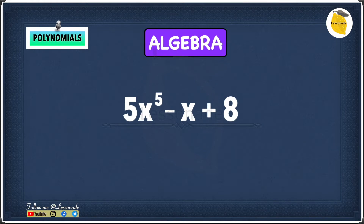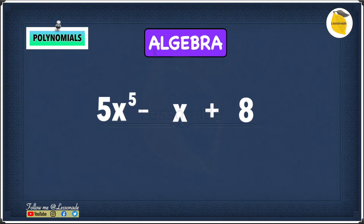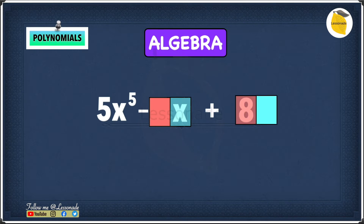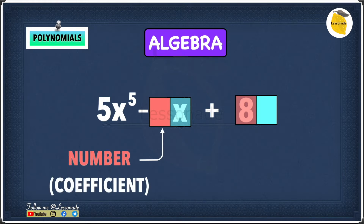Let's have a look at a typical polynomial: 5x raised to the power of 5 minus x plus 8. In this, we're missing something — in terms of the x and in terms of the 8. For the x, we're actually missing the number part, or the coefficient. For the 8, we're missing the variable.